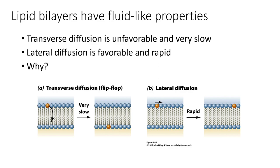Lipids can move in essentially two different directions. Transverse diffusion, also known as flip-flop, is when a lipid — say, the one labeled in orange — flips from the outer leaflet to the inner leaflet. This process is spontaneous but extremely slow. If you want it to happen at any reasonable speed, you need an enzyme to help flip the lipid from one leaflet to the other.